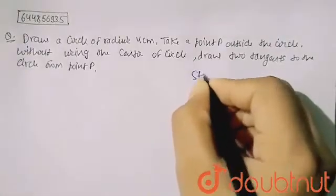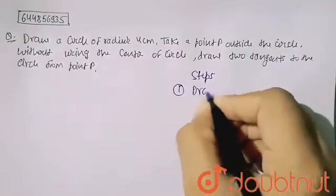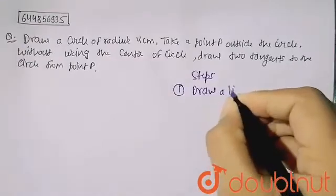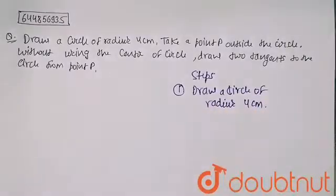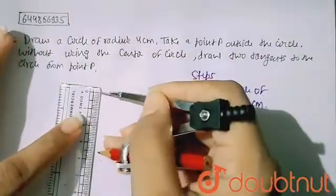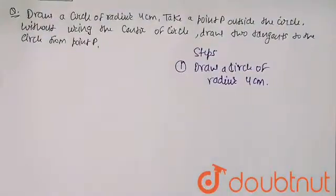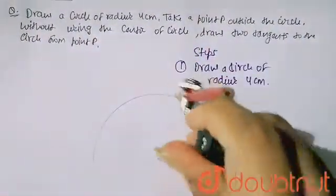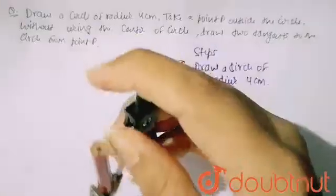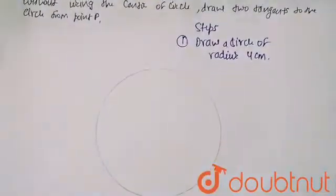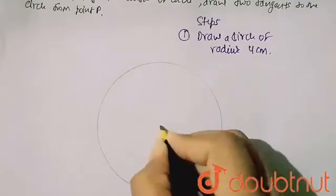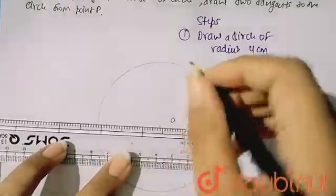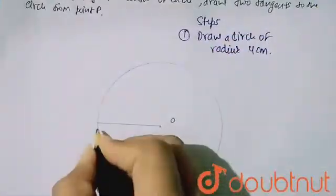So first here I am writing the steps. First I have to draw a circle of radius 4 cm. So here I am drawing the circle of radius 4 — you can see here I am measuring 4. Now the circle is drawn. This is my circle of radius 4. Now I have to take a point P outside the circle, so this is my point O. This is my 4 cm line and I am taking this point as B.